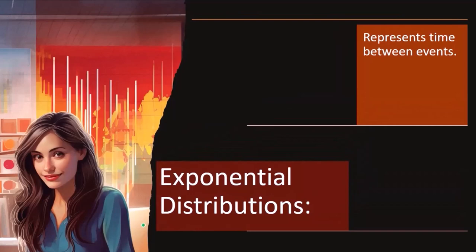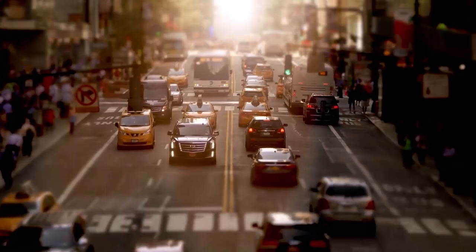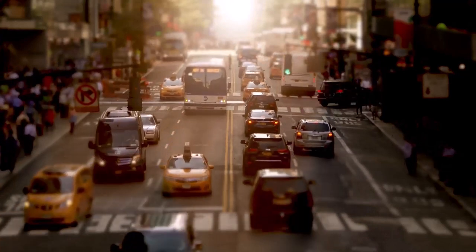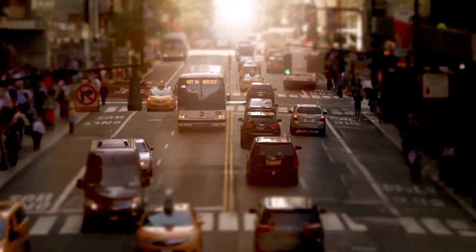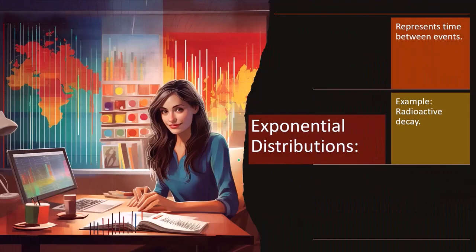The exponential distribution kind of flips that around. And now we're talking about the time between arrivals of individuals or cars. So it's a little bit more difficult, I think, for most people to kind of first wrap their mind around that relationship between the Poisson and the exponential distribution. The examples that we go through, I think will shed a lot of light onto that relationship.